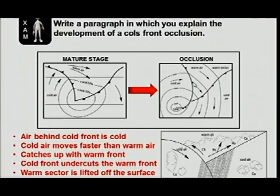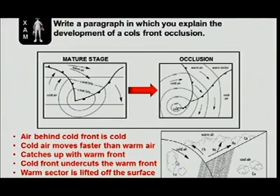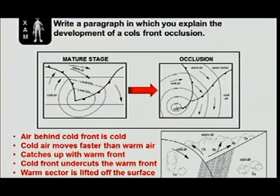Once the cold front catches up with the warm front, the cold air of the cold front undercuts the warm front. The cold air undercuts the warm air, and as a result, the warm sector is lifted off the surface. The warm air that was on one side gets lifted up as the cold front undercuts the warm front, and now you get all the warm air up in the upper atmosphere.